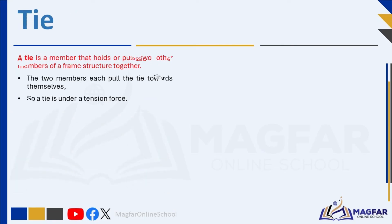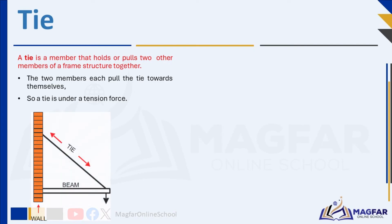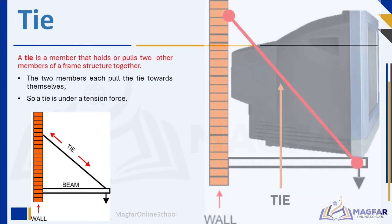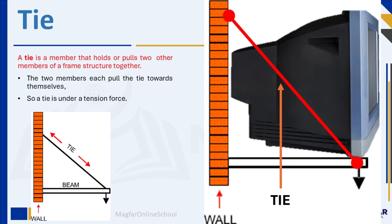A tie holds or pulls two members of a structure together. A tie must be strong enough to hold together structural members that are pulling away from one another. A framework can be made stronger by joining the members with a tie. The two members each pull the tie towards themselves, so a tie is under a tension force — this causes the tie to appear as if it is being stretched in two directions. Think of a shelf on a wall where you place your TV.